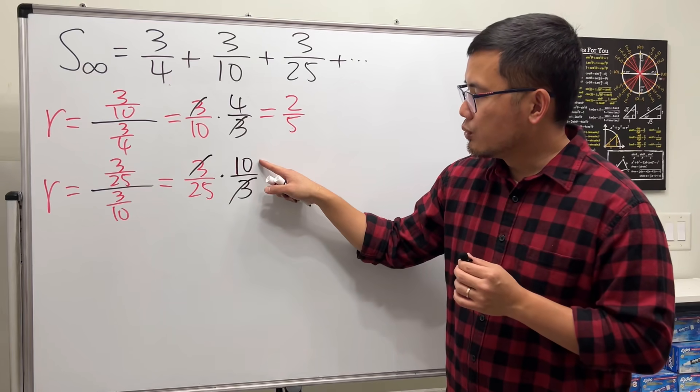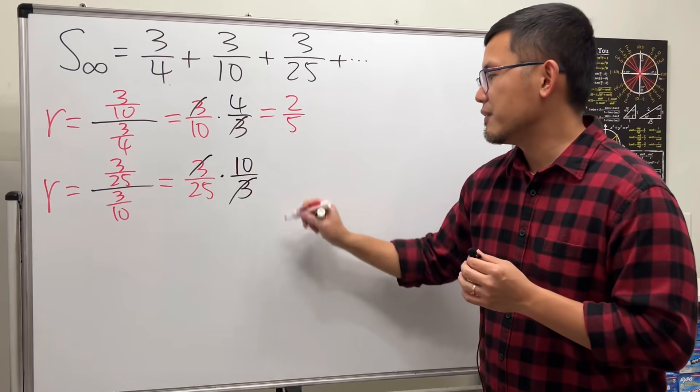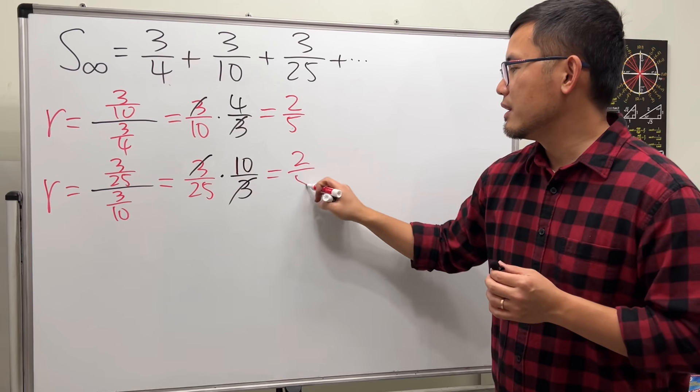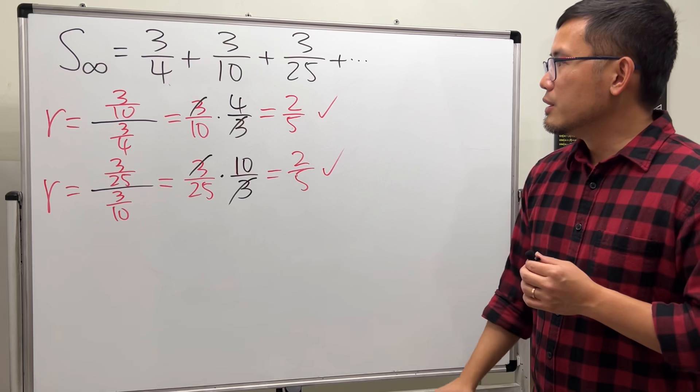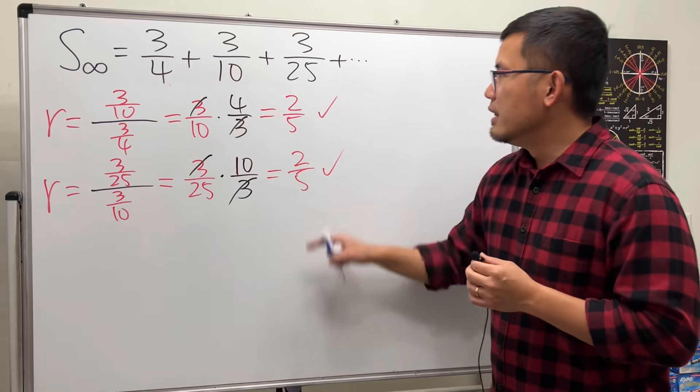Reduce, reduce - divided by 5 we get 2 on the top, divided by 5 on the bottom we get 5. So 2 over 5. So yes, this is indeed the common ratio.